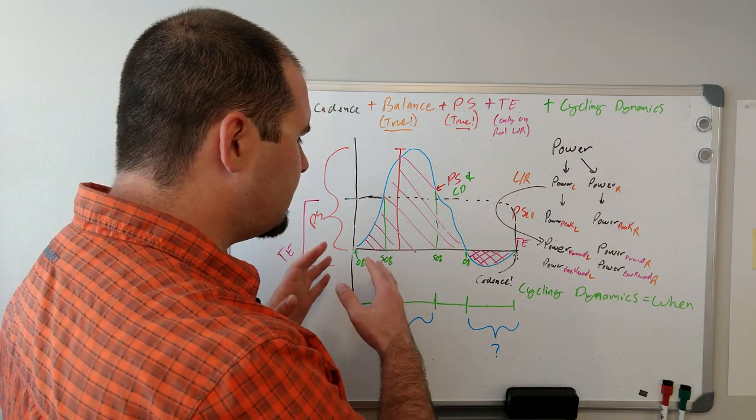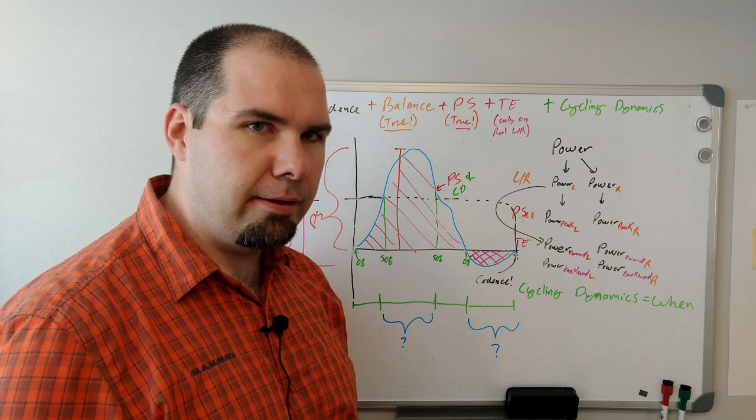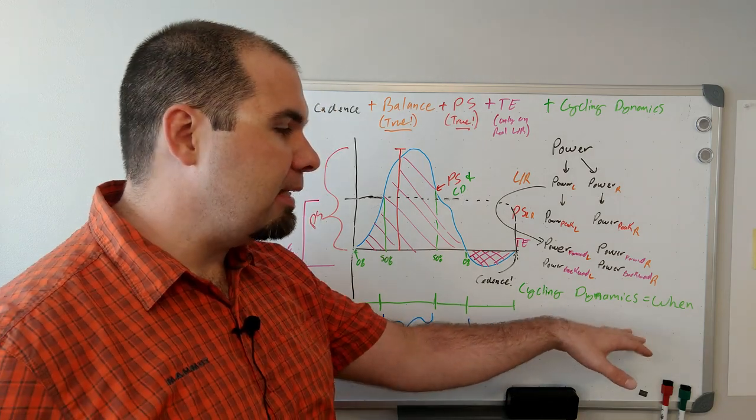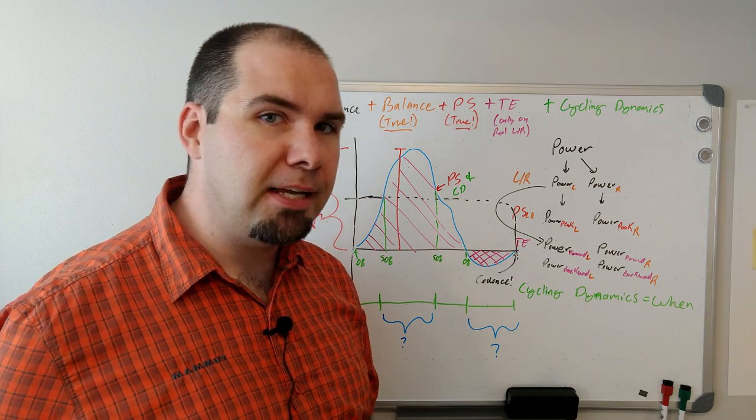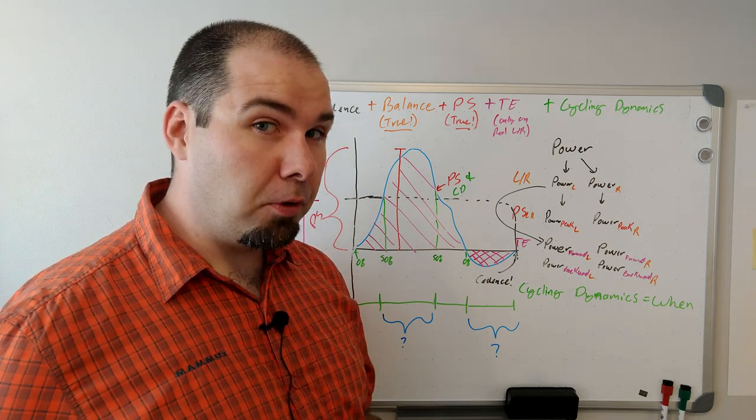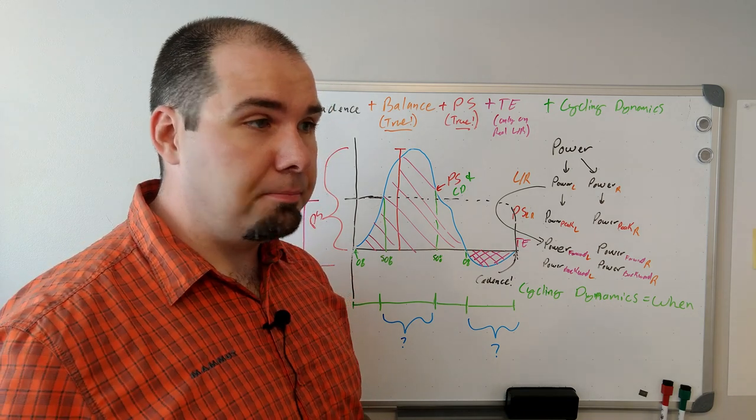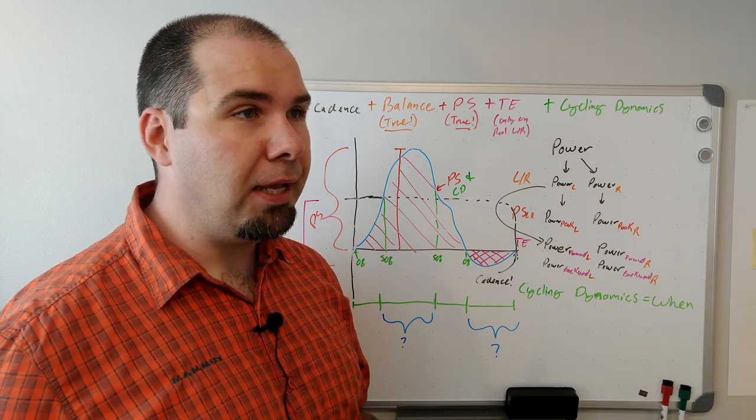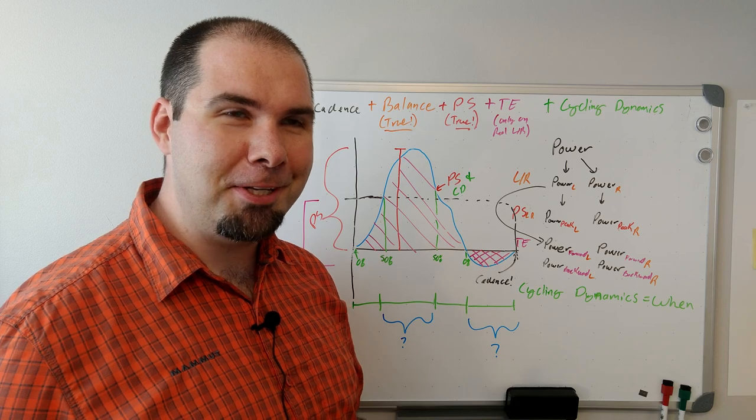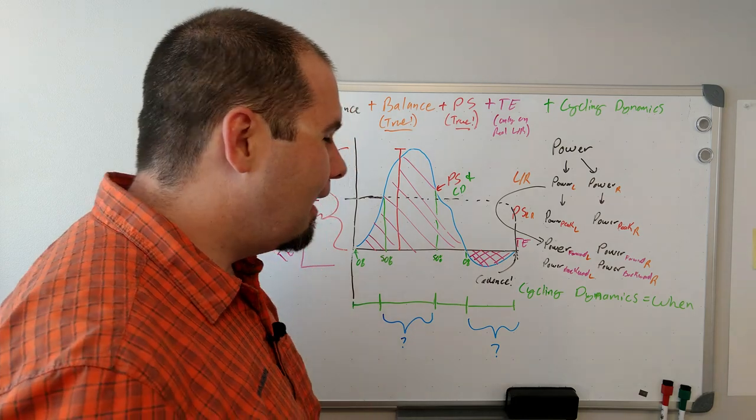So this essentially lacks all the when. And that's what cycling dynamics is, or at least the part that I'm looking at. It also encompasses platform center offset. Asioma isn't supporting this, and they say there's reasons. There is a different reason I suspect though, and I might have to go back and revise the video because of it.